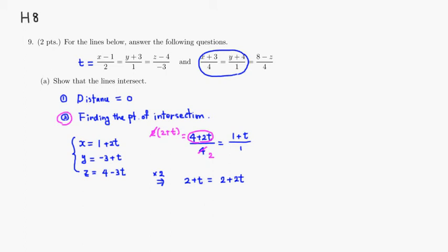Then we can just cancel 2 and 2 on both sides, and subtract t from both sides. So you get 0 on the left, and 2t minus t is t. Which means that when t equals 0, it's going to be on the first line and the second line at the same time.